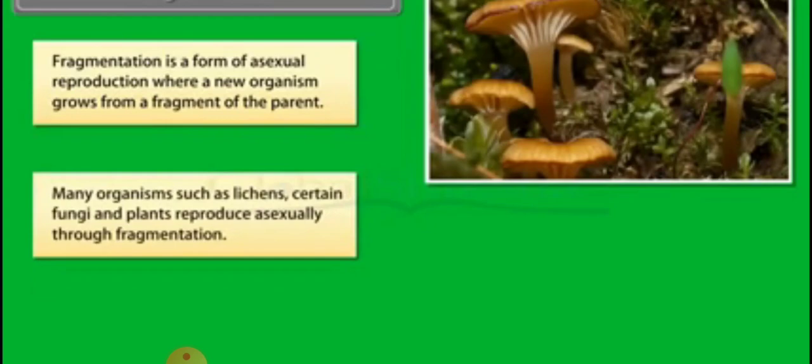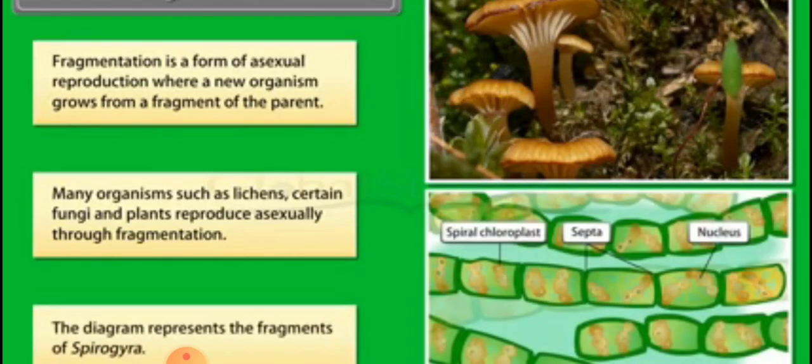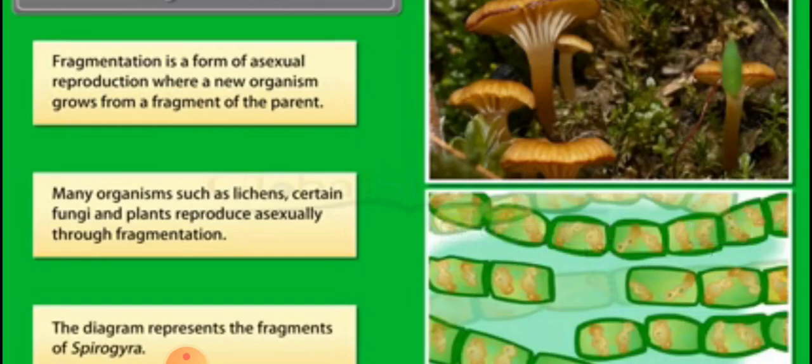Fragmentation is the other method of asexual reproduction wherein the new organism is formed by the fragmentation of a mature or an adult parent, commonly found in lichens, fungi and certain algae like spirogyra which reproduces by the process of fragmentation.